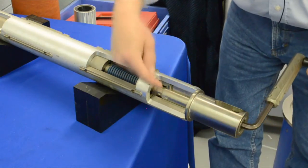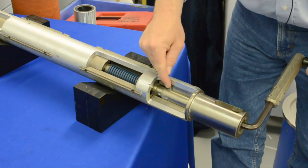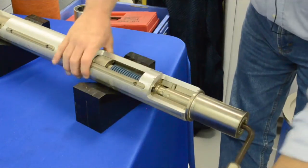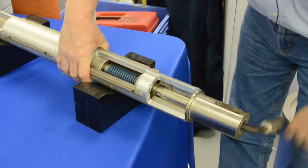On the Acme screw assembly there is a shear pin that's designed to fail if by chance the operator over torques the assembly.